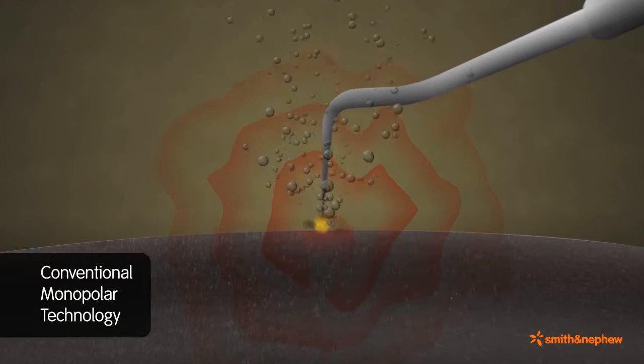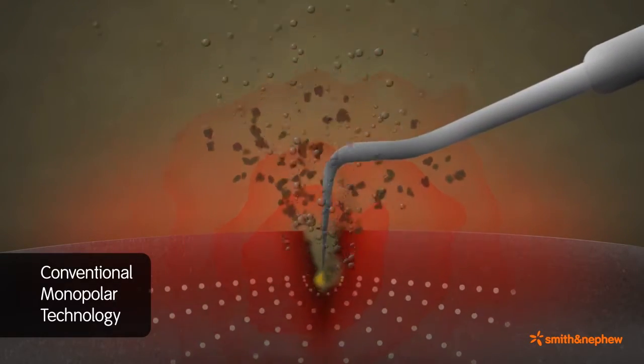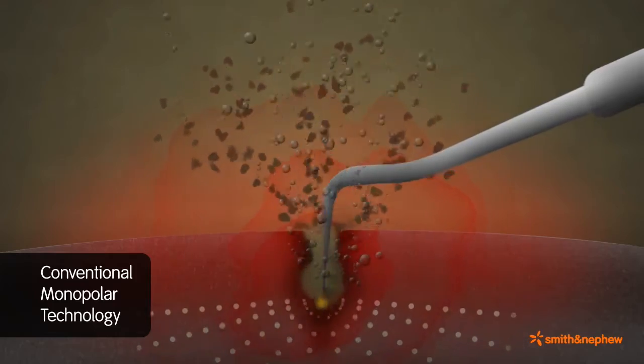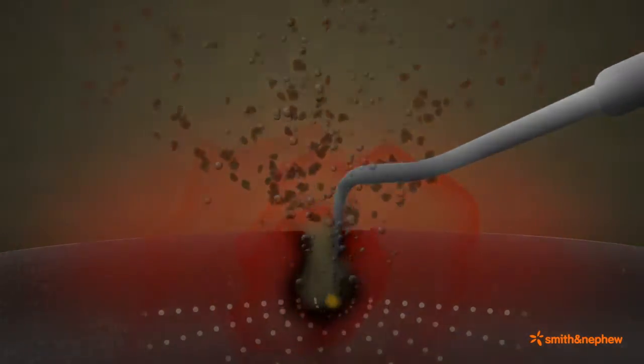In contrast, conventional monopolar electrosurgery delivers a powerful electrical arc into tissue. The high temperatures penetrate deep into surrounding tissue, which can cause extensive tissue damage.